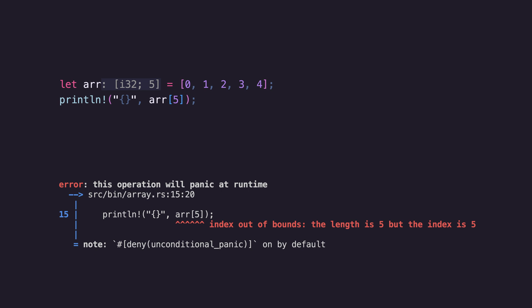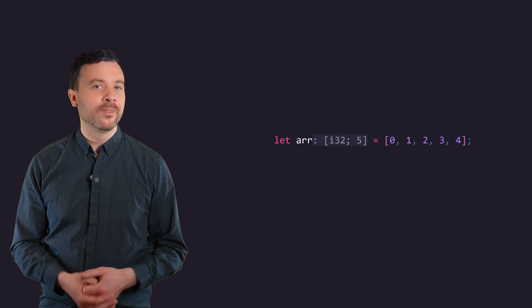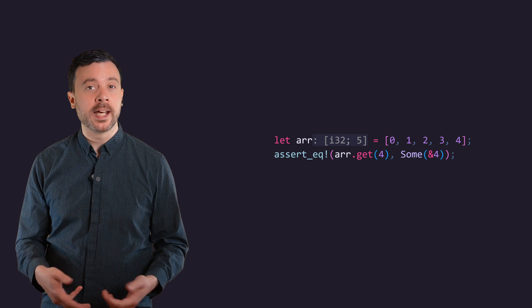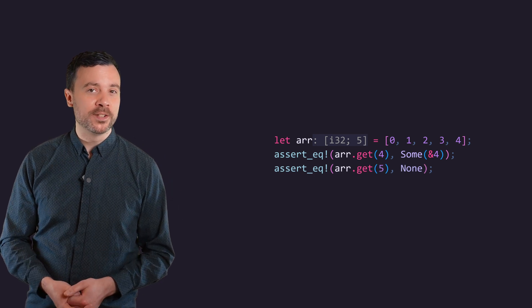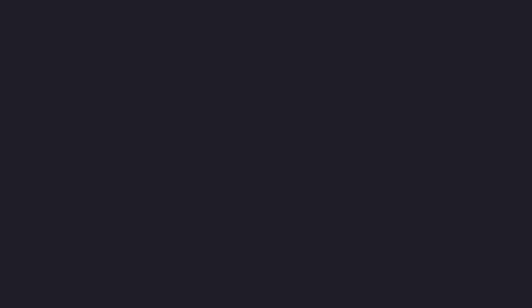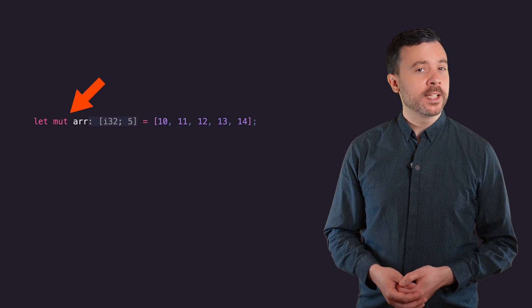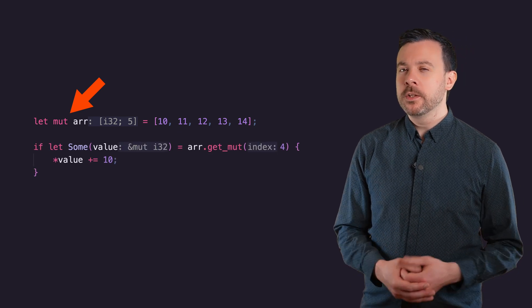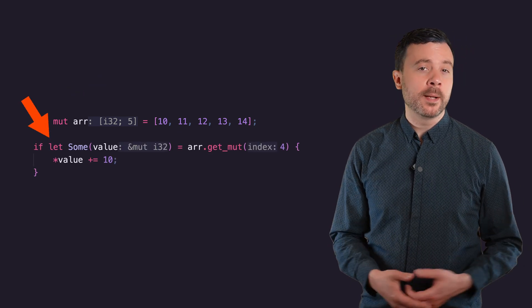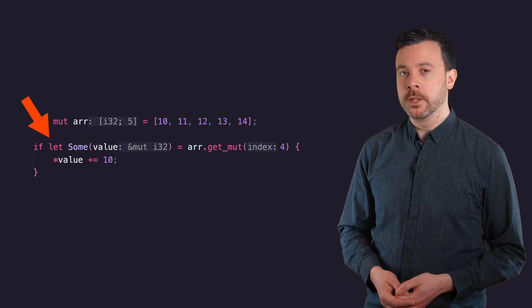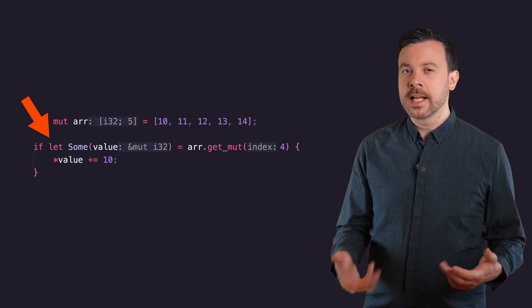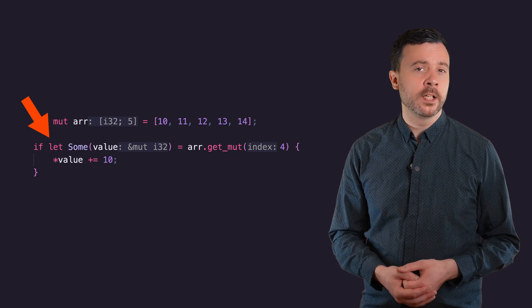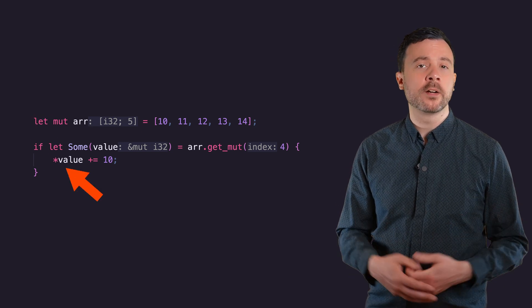If you're not sure an index is definitely in bounds, a safer way to get the data is to use the get method, which returns an option containing a reference to the data inside the array, assuming it's there, or a none if it's not. If the array is mutable, you can get a mutable reference to an entry using getMut. Note the use of if-let here to unwrap the option we get back from getMut. Also, because get and getMut actually return references, to change the value when we use getMut, we have to dereference first.